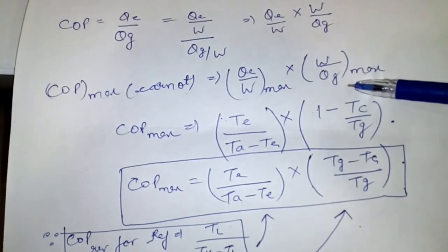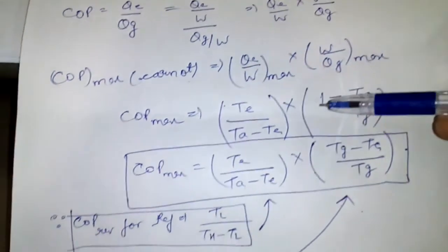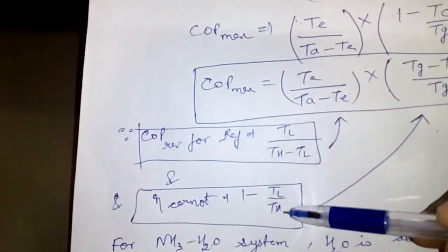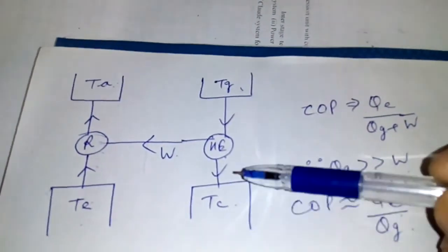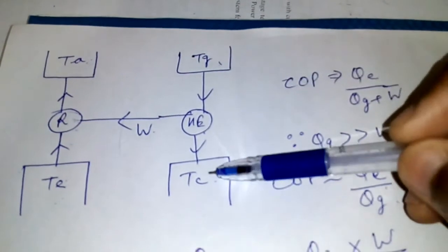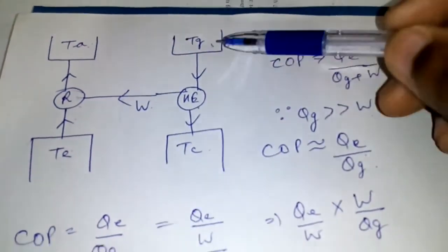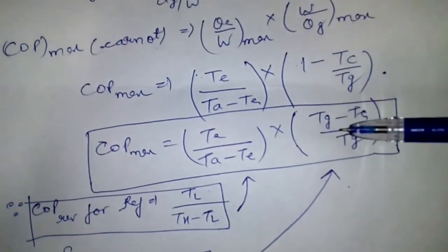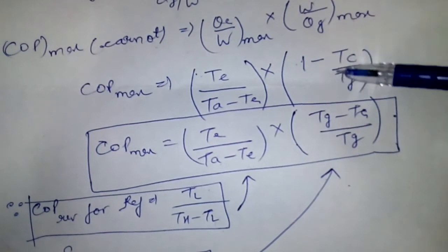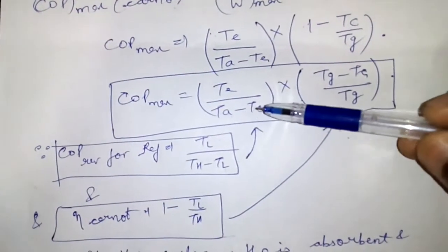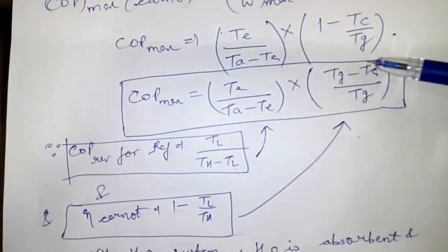Now W by QG is equal to efficiency of a reversible heat engine operating between TC and TG. So efficiency of Carnot heat engine is 1 minus T lower upon T higher. This is lower, this is higher, so 1 minus TC upon TG.